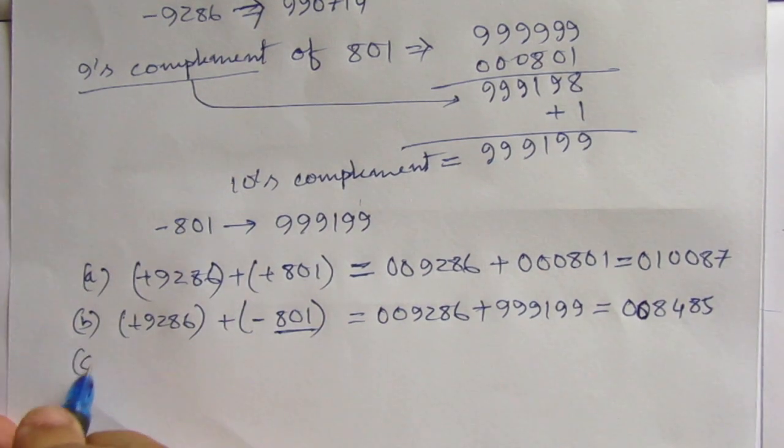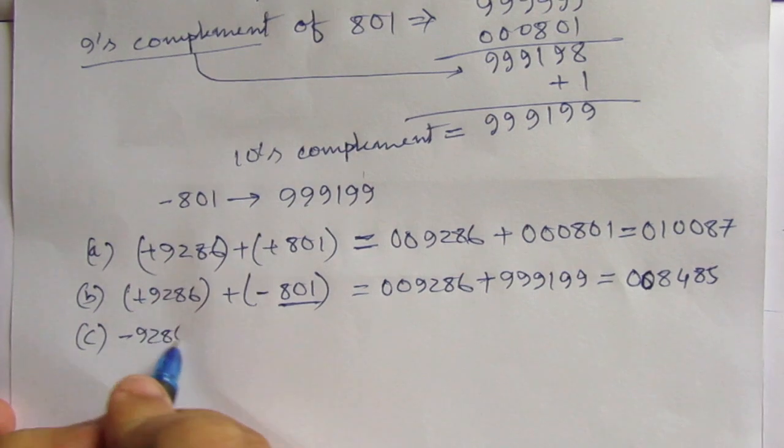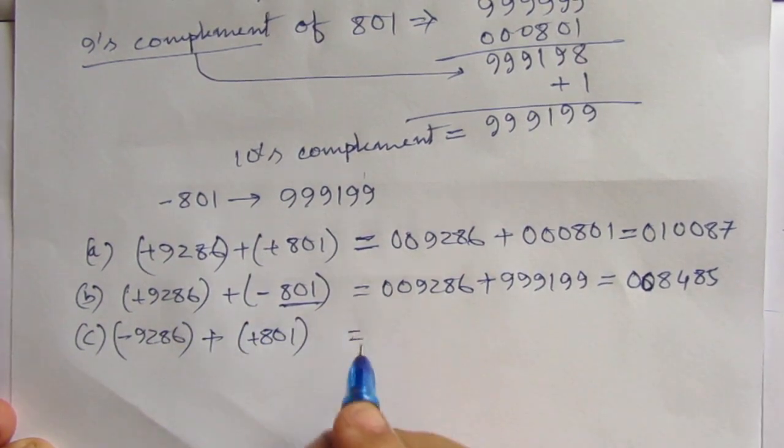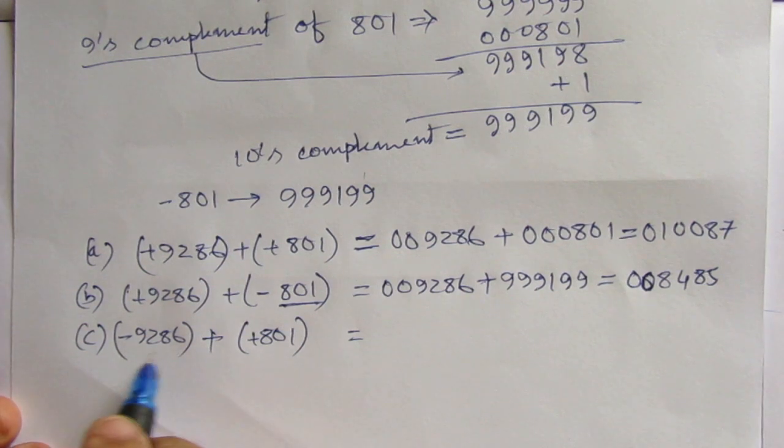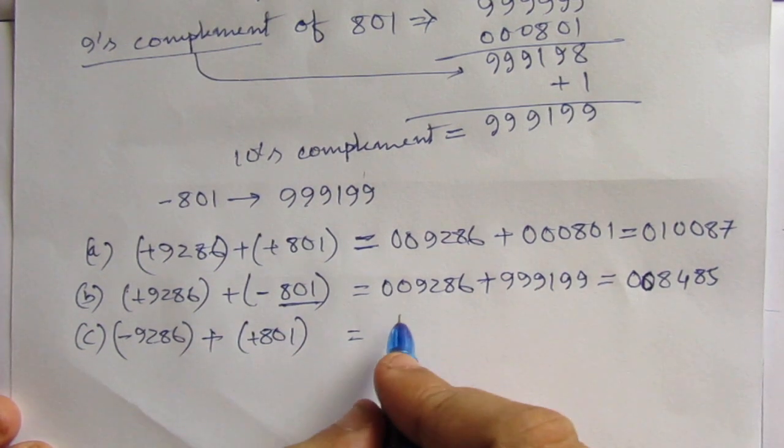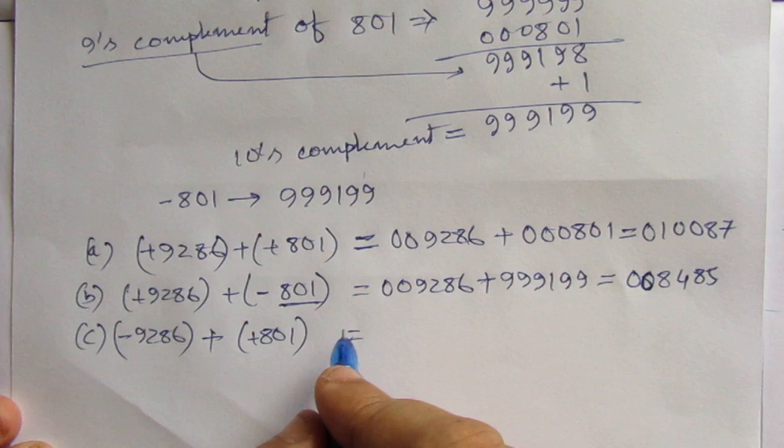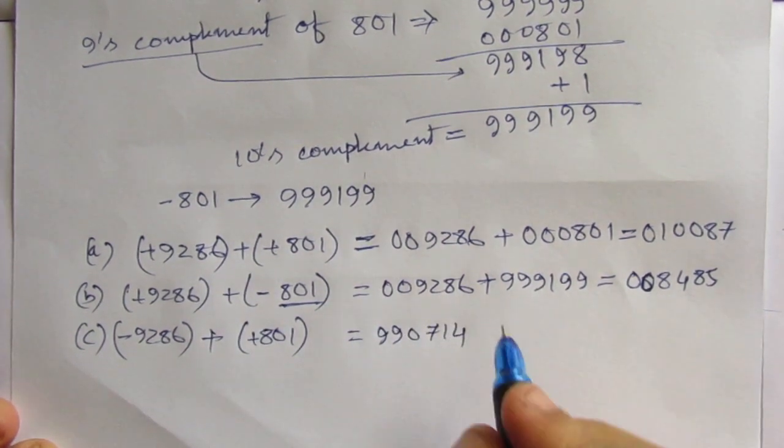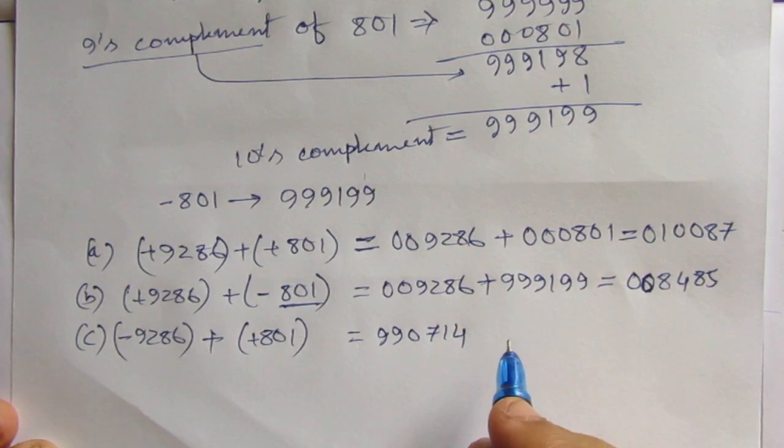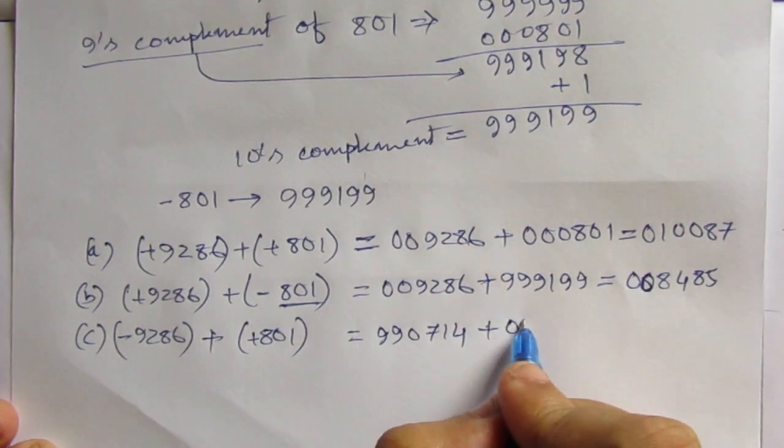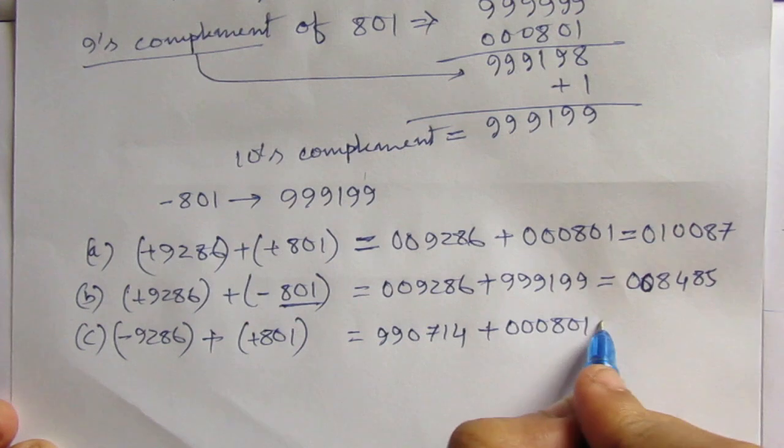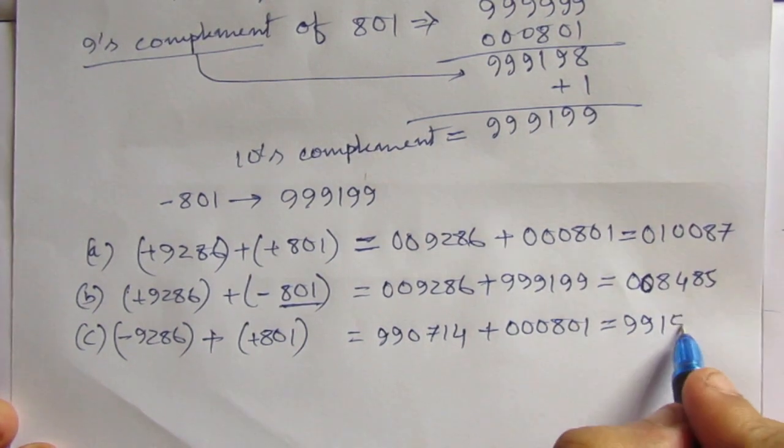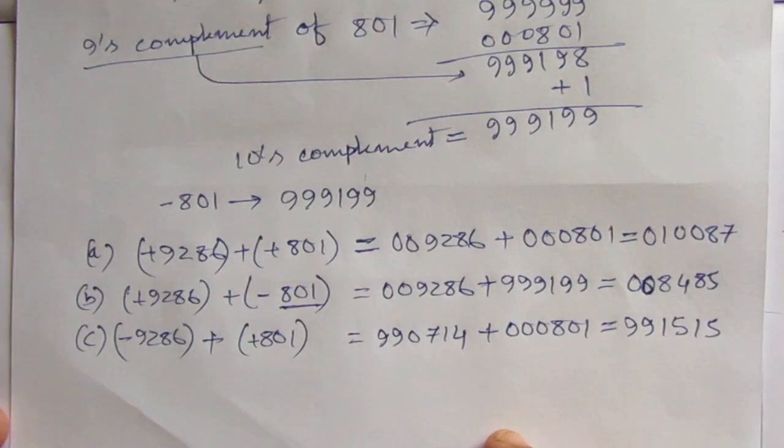Similarly for C, we have minus 9, 2, 8, 6 plus plus 8, 0, 1. So, this minus 9, 2, 8, 6 can be replaced with its 10's complement. The 10's complement of minus 9, 2, 8, 6 is 9, 9, 0, 7, 1, 4. So, we have already found this out. Plus 8, 0, 1, 0, 0, 0, 8, 0, 1. So, the answer will be 9, 9, 1, 5, 1, 5. This will be the answer.